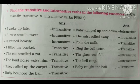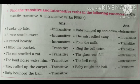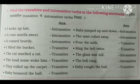Now find the transitive and intransitive verbs in the following sentences. I woke up late - intransitive. Baby jumped up and down - intransitive. A rose smells sweet - intransitive. The mist rolled away - intransitive. It rained heavily - intransitive. Pour the milk - transitive. I filled the bucket - transitive. Ring the bell twice - transitive. The cat smelled a rat - transitive. The glass was full - intransitive. The loud noise woke him - transitive. The bell rang - intransitive. They rolled up the carpet - transitive. Baby caught the ball - transitive. Baby bounced the ball - transitive.